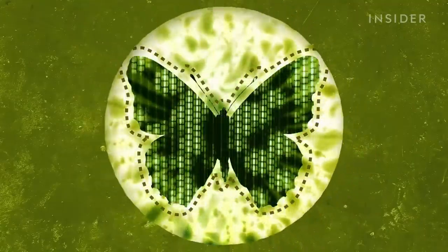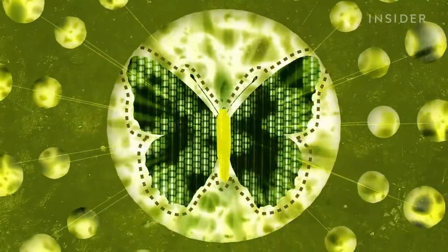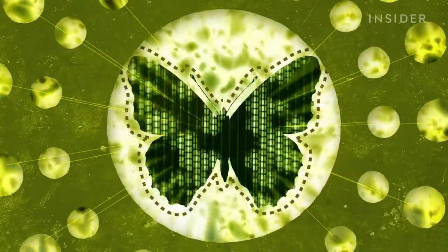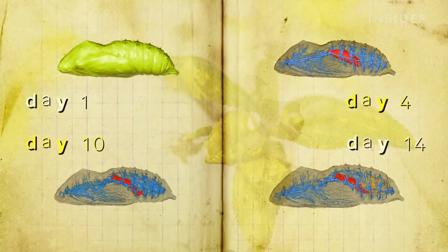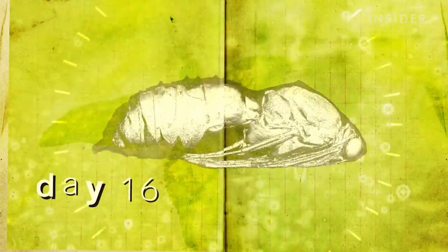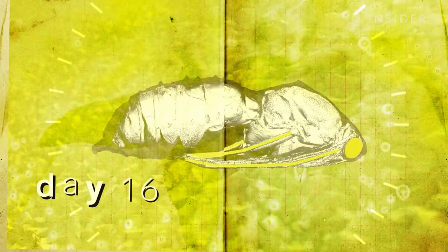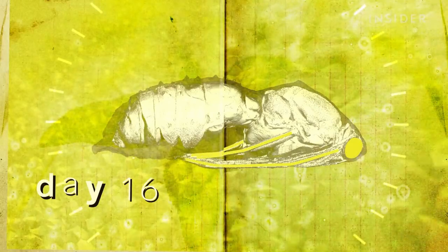You see, each disc contains the genetic recipe to form a different adult body part, starting from the inside out. After one week, the digestive system of the butterfly is well on its way. And by day 16, the adult's legs, wings, eyes, and mouth are all present and in working order.